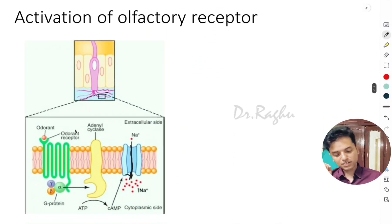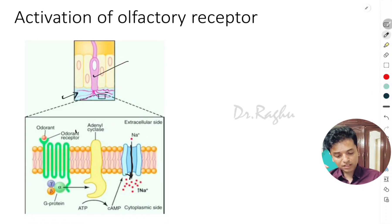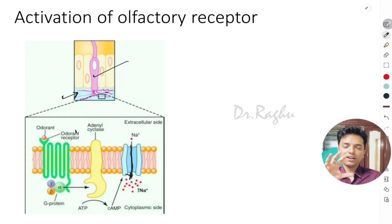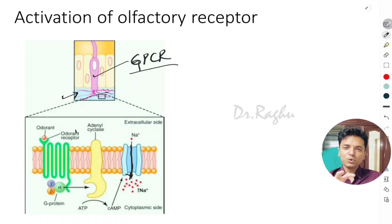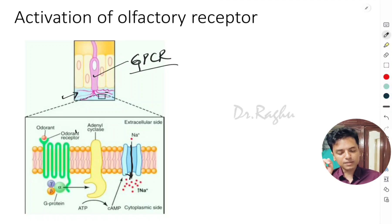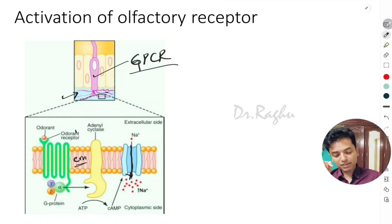Now let's understand how the olfactory receptor is activated. The ends of the olfactory hair or cilia have a receptor called the G-protein coupled receptor. This G-protein coupled receptor is present in the cell membrane, having an extracellular domain and an intracellular domain.